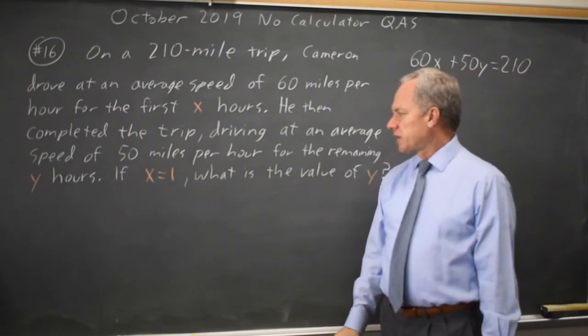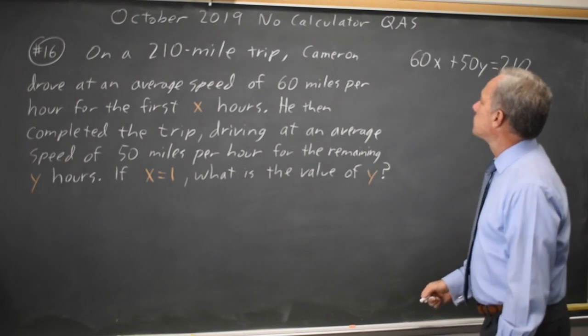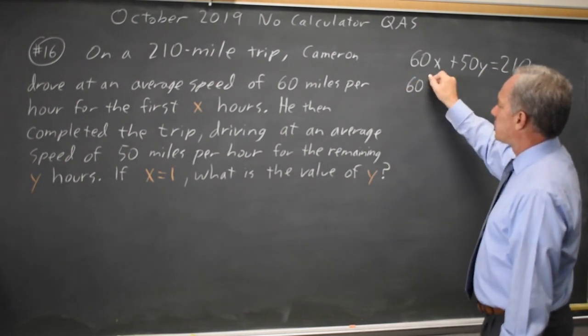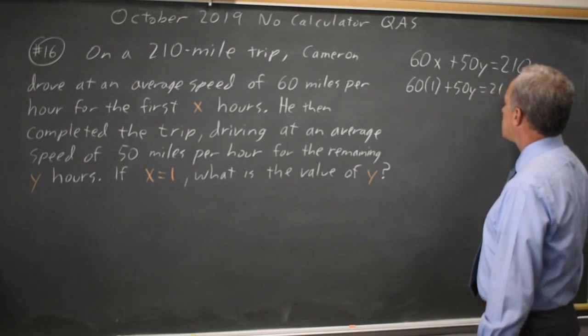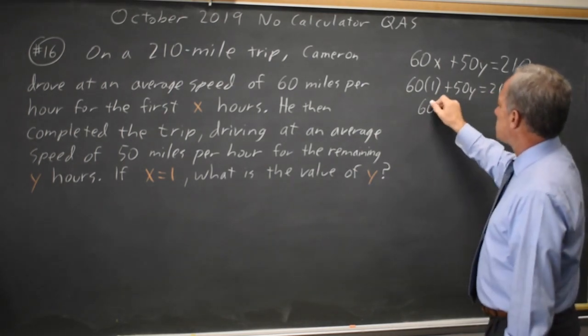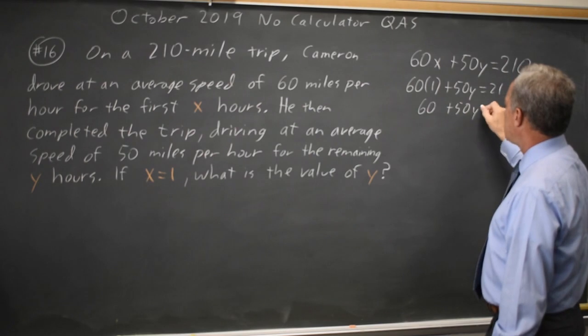College Board is asking us to solve for Y if X equals 1. So that's 60 times 1 plus 50Y equals 210. 60 plus 50Y equals 210.